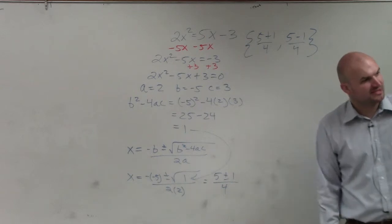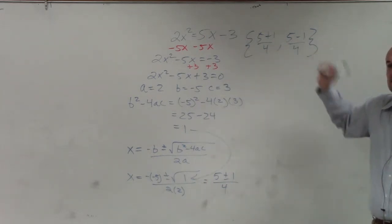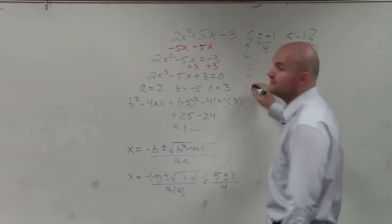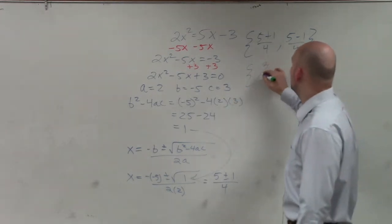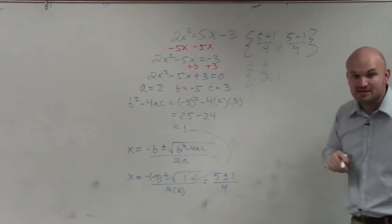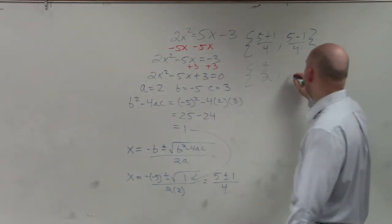Well, that can obviously be simplified. 5 plus 1 is 6. 6 over 4 is 6 fourths, which can be reduced to 3 halves. 5 minus 1 is 4. 4 divided by 4 is 1.